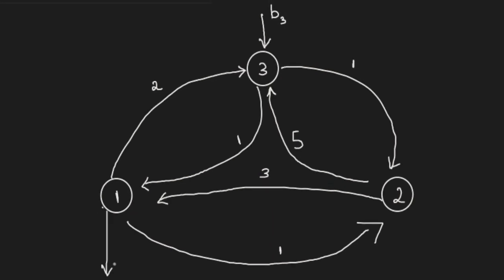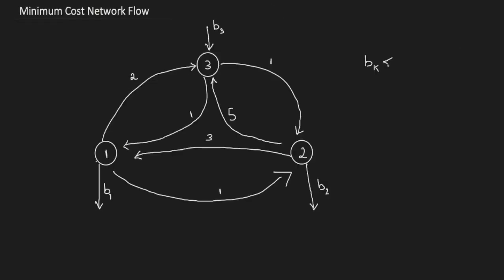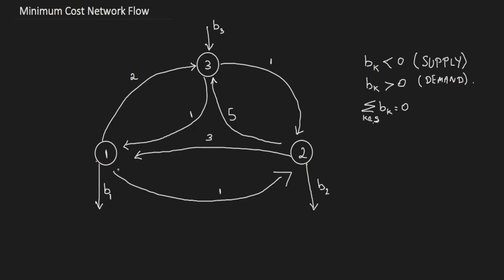We call the external supplies b3 for node three, b1 for node one, and b2 for node two. The b's are referred to as external supplies. If b is negative, it means the node is supplying; if positive, it is demanding. To have a valid supply-demand balance, we enforce that the sum of all bk equals zero, where k ranges over the set of nodes one through three.